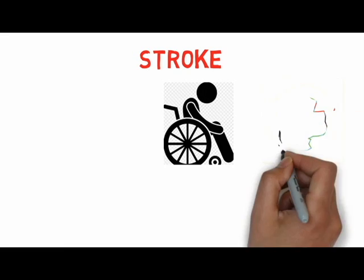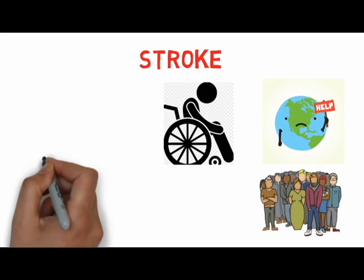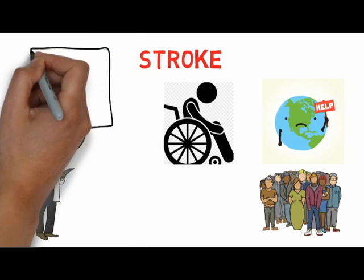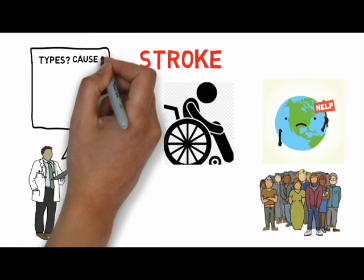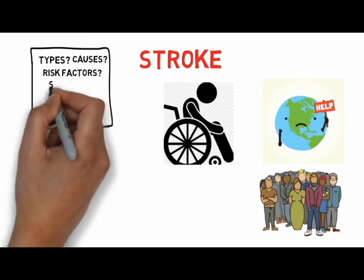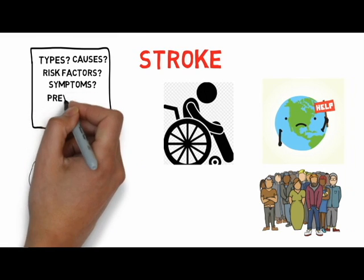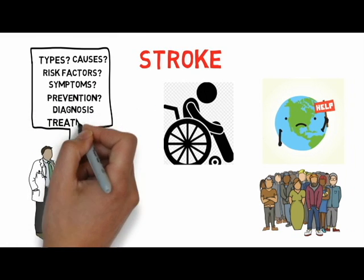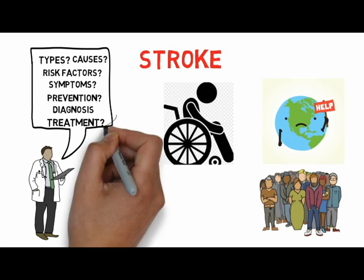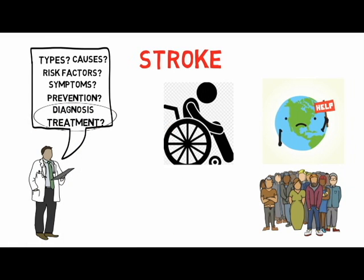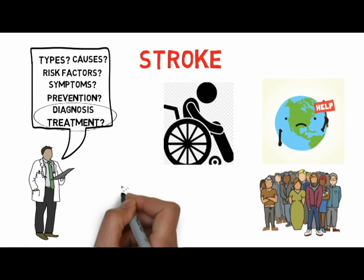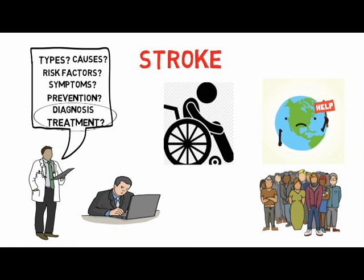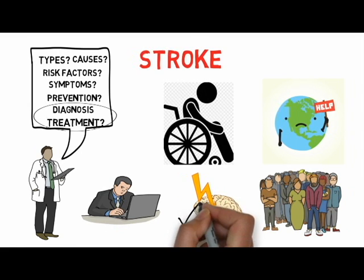Today we will discuss about stroke. It is one of the most common causes of disability worldwide. I will explain stroke in terms of its types, causes, risk factors, symptoms, how it can be prevented, how it is diagnosed, and what are the treatment options. I will cover diagnosis and treatment in my next video, so do watch both videos till the end.